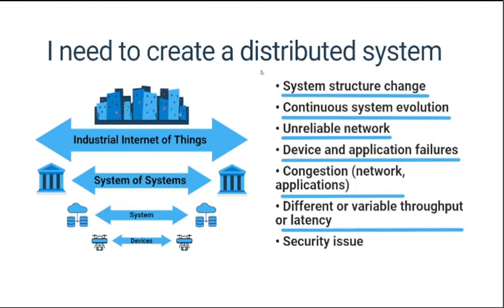Also, each part of a distributed system may have different network characteristics and you may encounter different or variable throughput or latency in different parts of your system — and how will you deal with this? Last but not least, you need to address security issues, and many, many more.